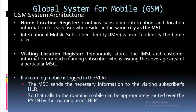The Home Location Register (HLR) contains subscriber information and location information for each user who resides in the same city as the MSC. The International Mobile Subscriber Identity (IMSI) is used to identify the home user. The Visitor Location Register (VLR) temporarily stores the IMSI and customer information for each roaming subscriber visiting the coverage area of a particular MSC. If a roaming mobile is logged in the VLR, the MSC sends the necessary information to the visiting subscriber's HLR so that calls to the roaming mobile can be appropriately routed over the PSTN.